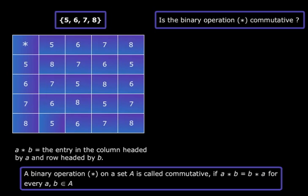So let's check the commutativity of star. You see that 5 star 6, that is the entry in the column headed by 5 and the row headed by 6. Yes, we are talking about this element. So 5 star 6 equals 7. And what about 6 star 5? Look at the table, 6 here, 5 here, this element. So we see that 6 star 5 is also 7. And this tells us that 5 star 6 equals 6 star 5.